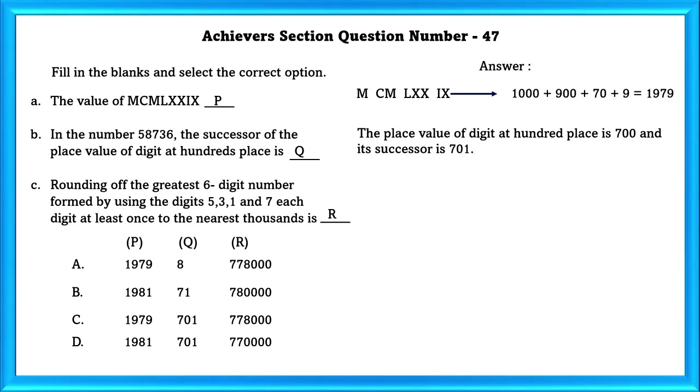C: Rounding off the greatest 6 digit number formed by using the digits 5, 3, 1 and 7, each digit at least once to the nearest thousand is.